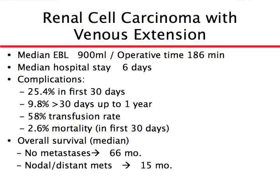These are big surgeries — average blood loss is almost a liter, surgical time about three hours, and hospital stay about a week. This is not a simple operation or simple recovery. Complications in the first 30 days can be as high as 25%. As for survival, if there is no spread of cancer elsewhere, average survival is about five years. If there is spread to lymph nodes or distant areas such as lung, bone, or liver, average survival is about 15 months.